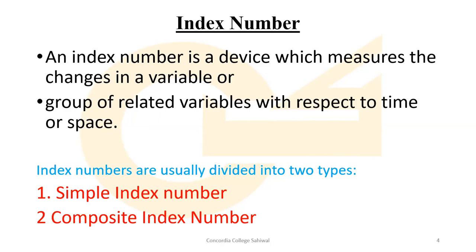So, an index number is a device which measures relative changes in a variable or group of variables with respect to time or space. For example, we measure change over time — we see what the price of milk was in 2005 and what the price of milk is today in the current year 2020. So we call this change measured over time.